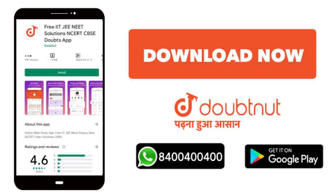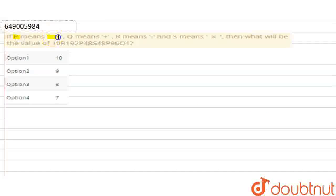Download now. If P means division, Q means addition, R means subtraction and S means multiplication, then what will be the value of 10R192P48S48P96Q1? We need to find this value.